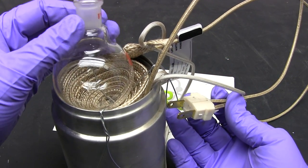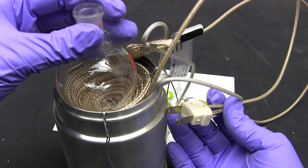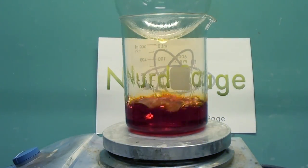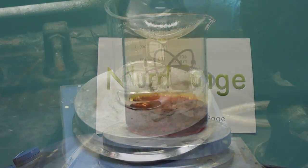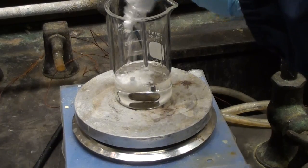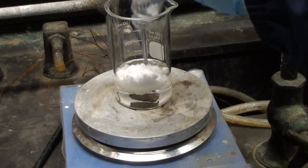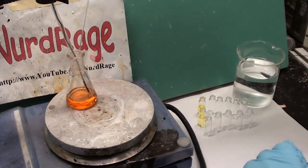Greetings fellow nerds. In this video we're going to make a heating mantle. Now hot plate stirrers are great and for most purposes you'll never need anything more. But their maximum temperature usually tops out at about 300 to 400 degrees celsius.